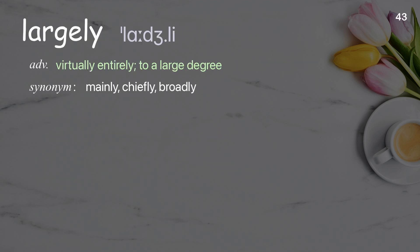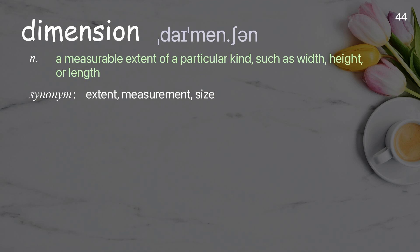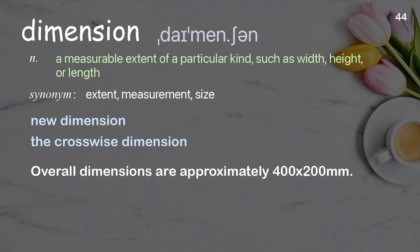Largely: virtually entirely; to a large degree. Dimension: a measurable extent such as width, height, or length. Examples: new dimension; the crosswise dimension. Overall dimensions are approximately 400 by 200 millimeters.